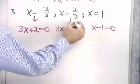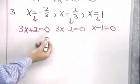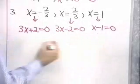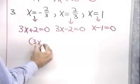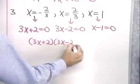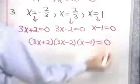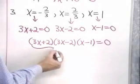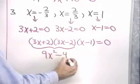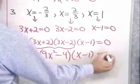So in each case, what we do is go from the original solution to an equation that has 0 on one side. Now, if all three of these expressions are equal to 0, then so is their product. 3x plus 2 times 3x minus 2 times x minus 1 is also equal to 0. Let's see, I'll multiply these two out and that will give me 9x squared minus 4 times x minus 1 equals 0.